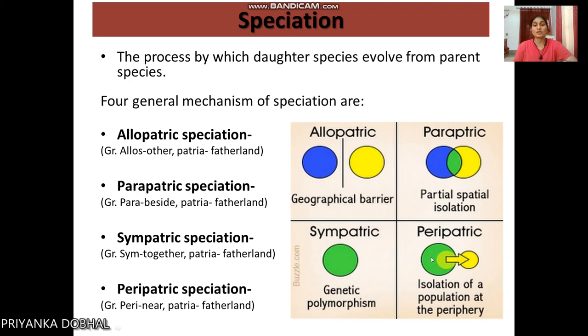In sympatric speciation there is no movement to another area — the new species shows new polymorphic structures within the same area. In peripatric speciation, it was originally a common species, and some individuals moved to another area or land to become a different population.